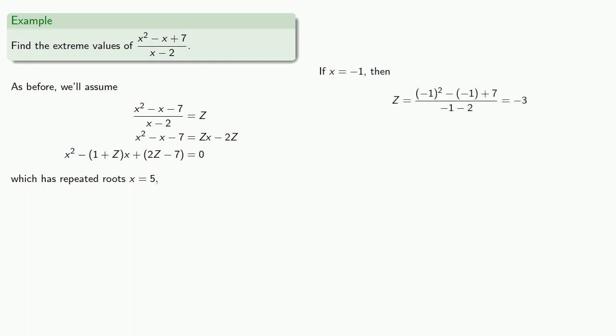Likewise if x equals negative 1, then our z value is. And solving our equation gives us. We see that x equals negative 1 is a double root, and so our repeated roots are 5 and negative 1.